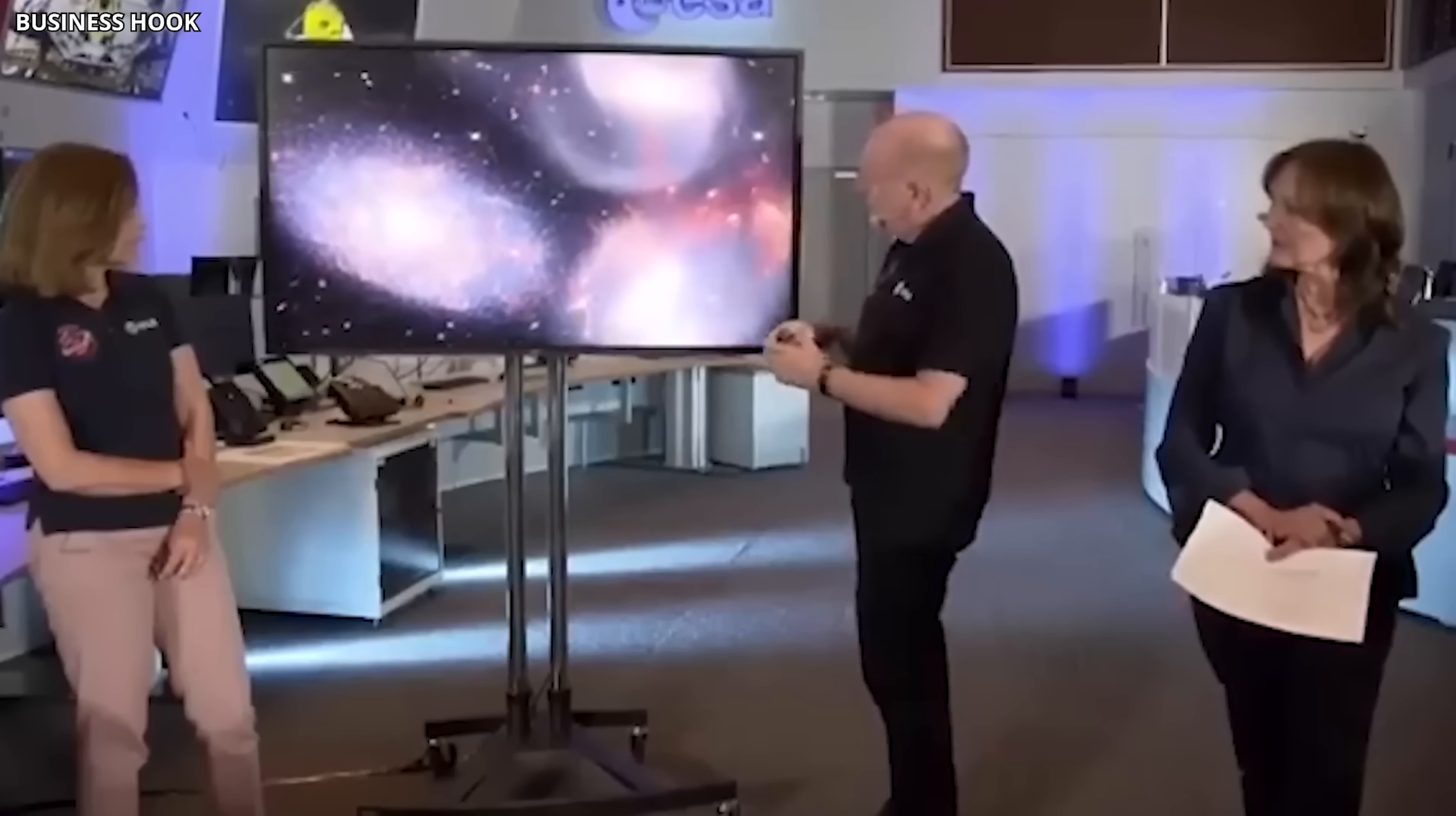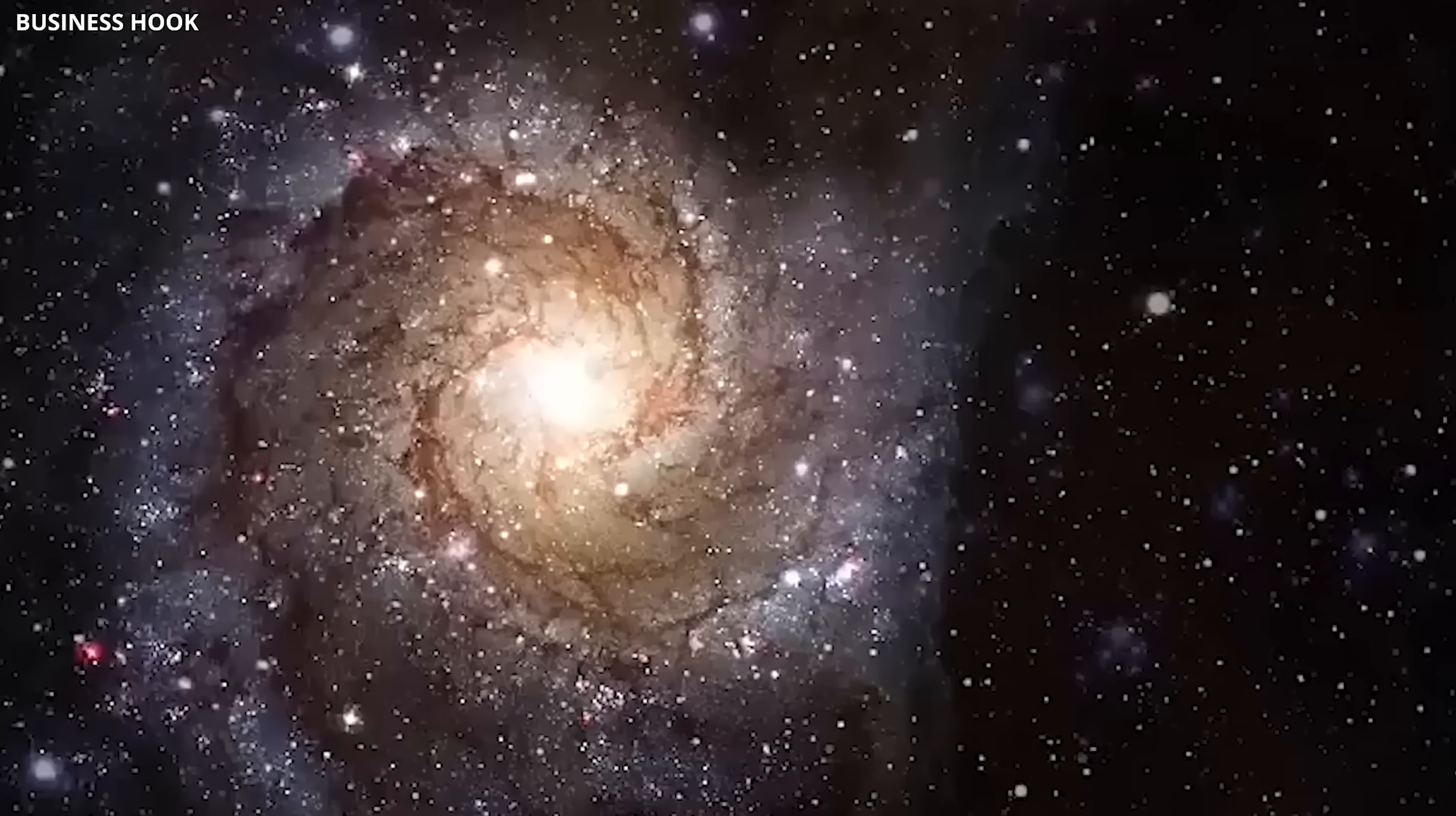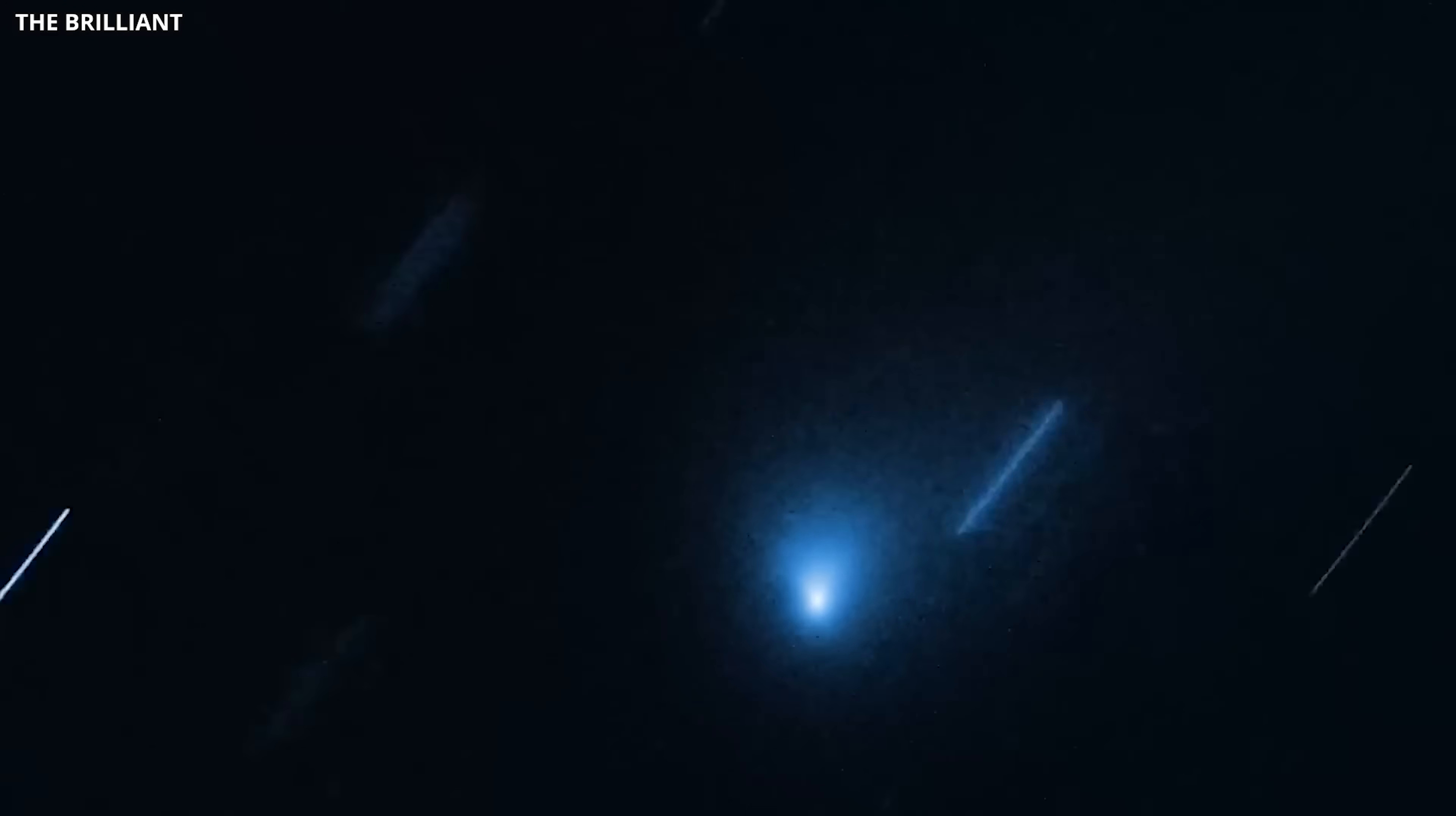One particularly captivating illustration from their findings depicts a unique early galaxy that fundamentally challenges our established concepts of how galaxies are constructed. Conventionally, galaxies are composed of diverse materials, such as gas and dust, revolving around a central core, which are essential for star formation. Through extensive analyses, scientists have typically concluded that merely 10% of a galaxy's gas transforms into stars.